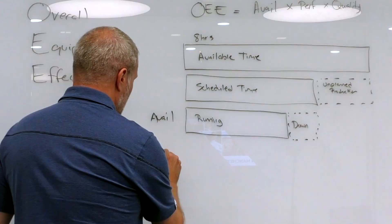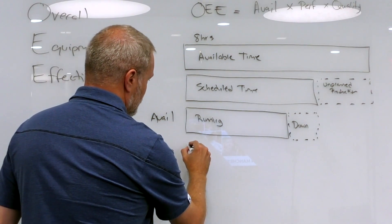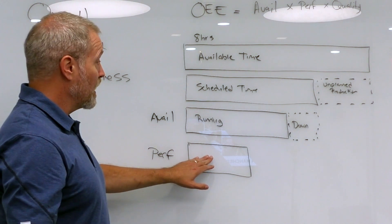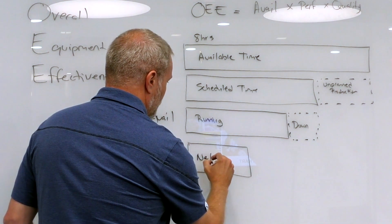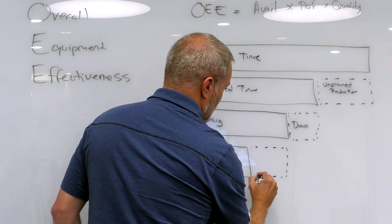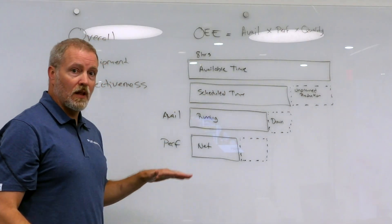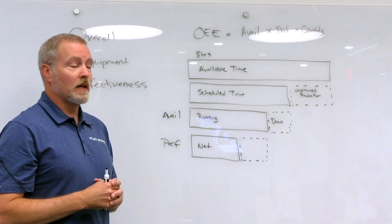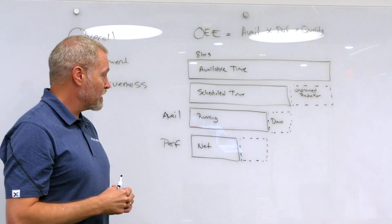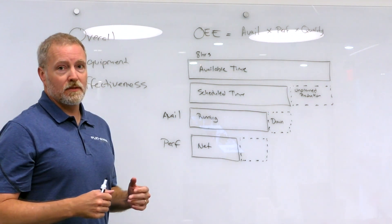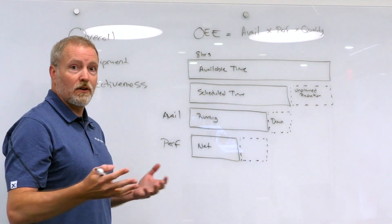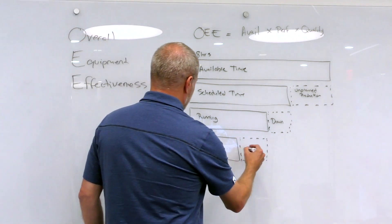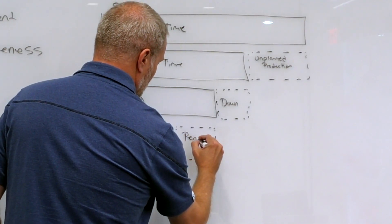If we look at performance, it's the next type of loss that we can create. A lot of times this is defined as the net production or net running time. The additional losses that come from here are represented by not running the machine or the line at the full rate of speed. If a machine is supposed to produce a certain number of parts per hour and you've dialed back that machine so it's not running as fast, you're losing performance. You can also lose performance through no fault of the machine, but maybe parts aren't available. In some industries we call that standby loss. It could be blocked or starved events.